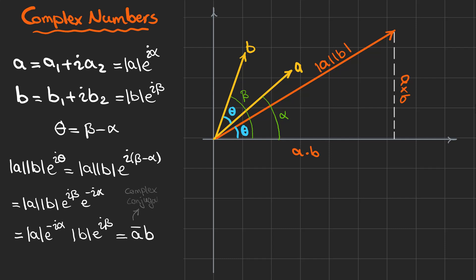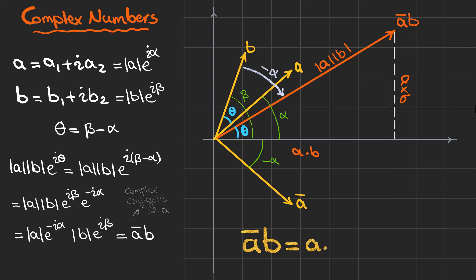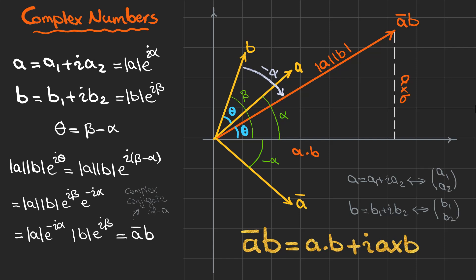Here ā is the complex conjugate of a, which we can show on the 2D plane as having the same real part but a negative angle. So this orange complex number is ā multiplied by b. When we multiply ā by b, it rotates by minus alpha and rescales to give the orange complex number. As you can see, we can write the multiplication of two complex numbers as the dot product plus i times the cross product, and we can associate vectors to these complex numbers.